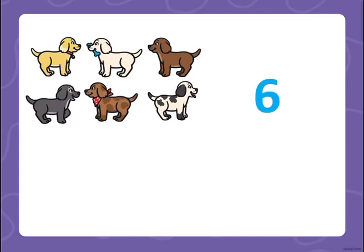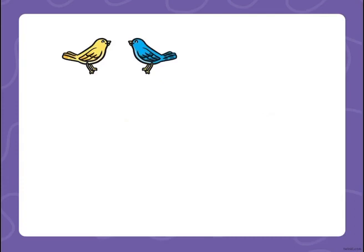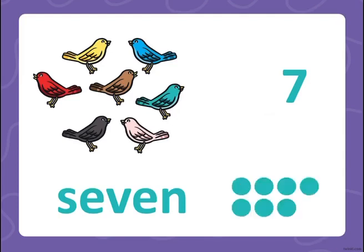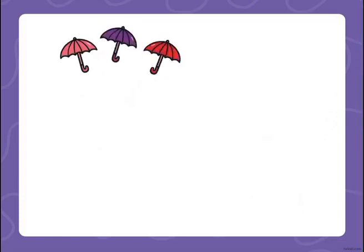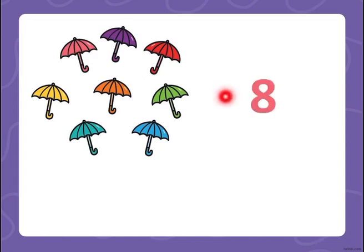One, two, three, four, five, six — we have here six dogs. One, two, three, four, five, six, seven — we have here seven. Here is the number seven. One, two, three, four, five, six, seven, eight — we have here eight.